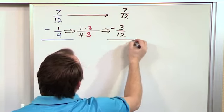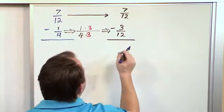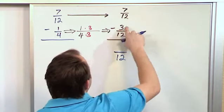And I remind myself I'm subtracting. So I'm subtracting 7 twelfths minus 3 twelfths. Since the denominators are the same, I just keep it along for the ride. And in the numerator, 7 minus 3 is 4.